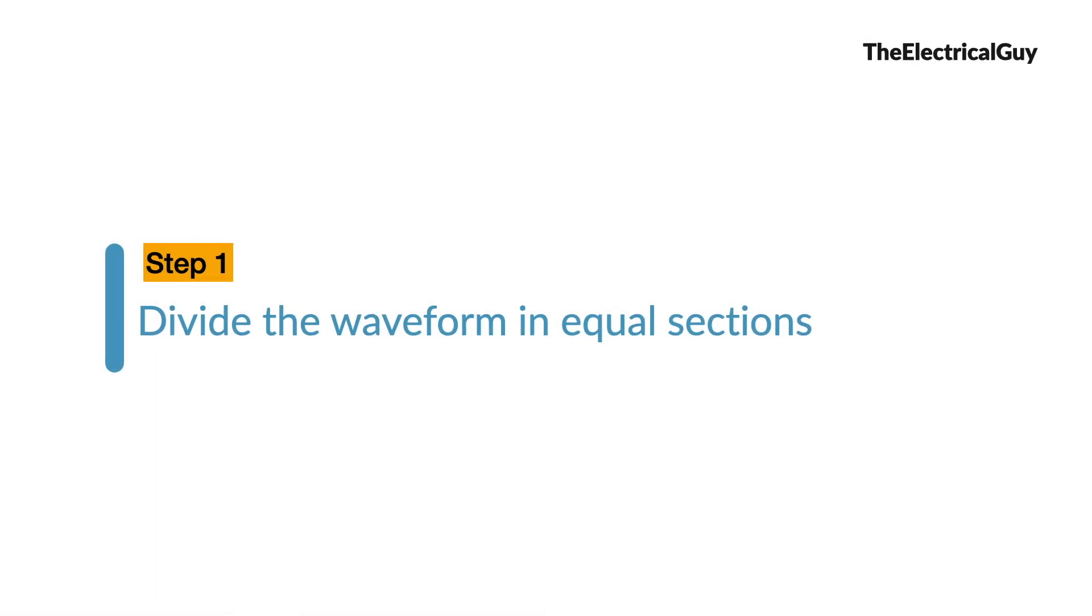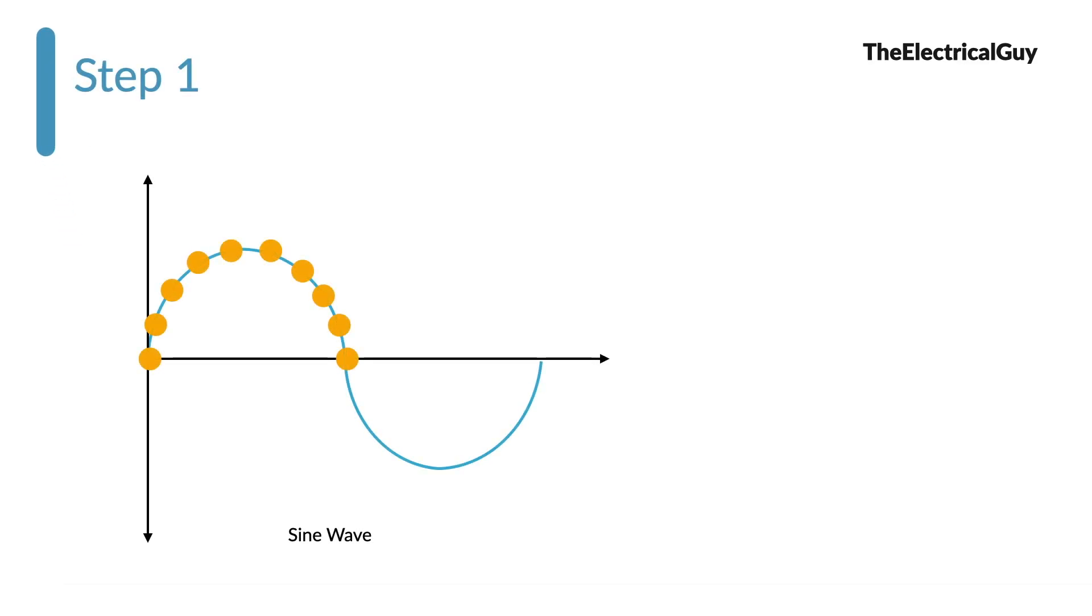Step number 1. Divide the waveform in equal sections. Simply mark the points on equal distance as shown. To understand we will consider only half cycle. You can of course do it for second half cycle if you want. So the mark values are shown here.